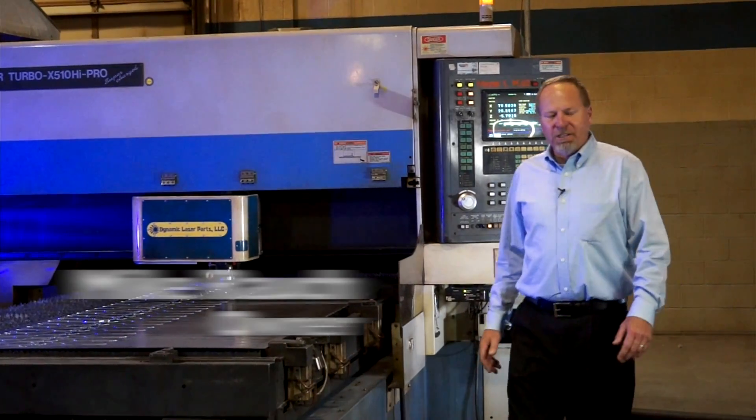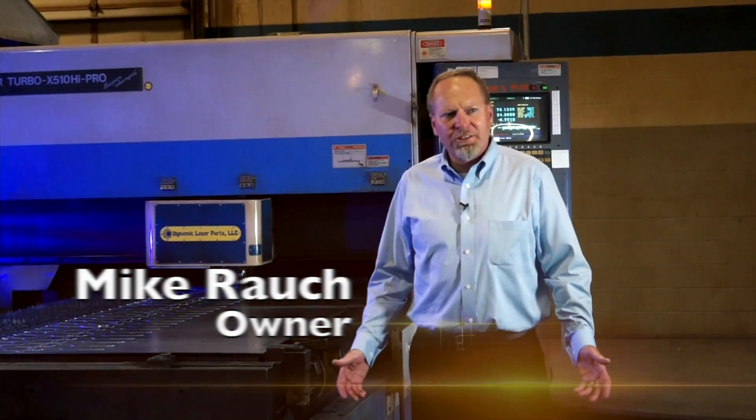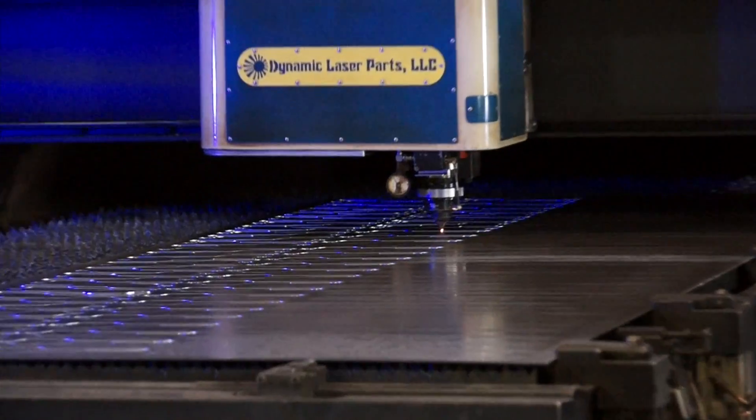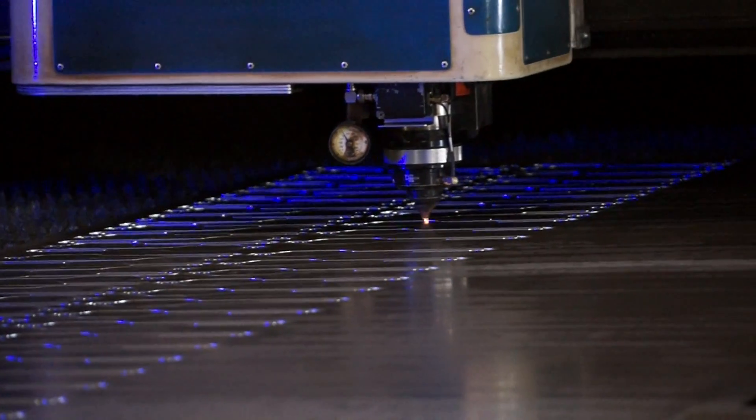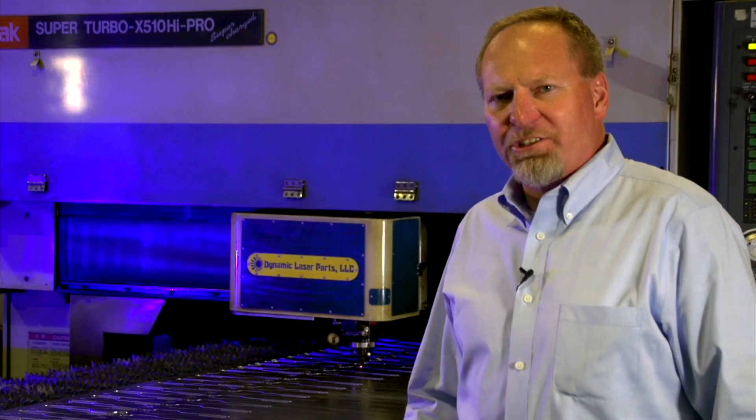Hi, I'm Mike Rauch and you're at Dynamic Laser Parts. Dynamic Laser Parts is located in Sussex, Wisconsin. Here we're laser cutting metal. We can cut just about any kind of metal at a quarter inch thick: stainless steel, cold rolled, galvanized aluminum.